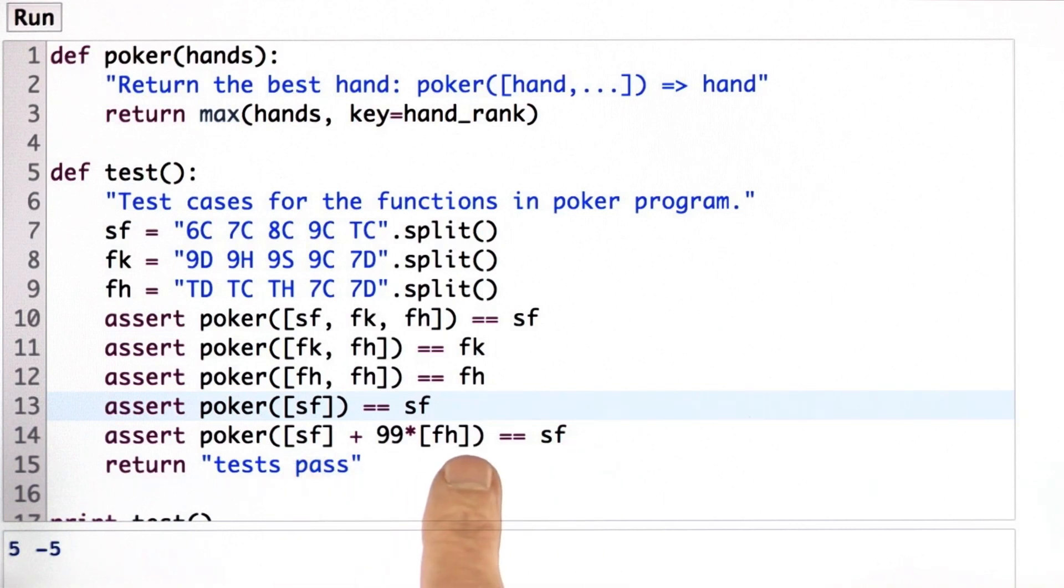You may not know this notation, these types of operators. In Python, we can take a list and multiply it by a number. And that just says repeat that list that many times.